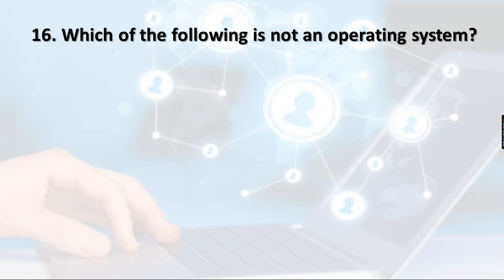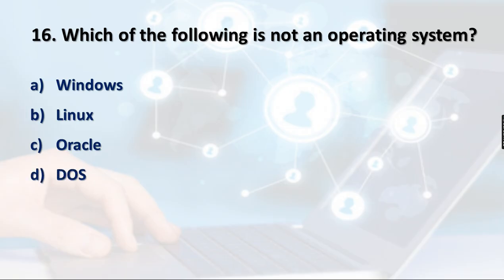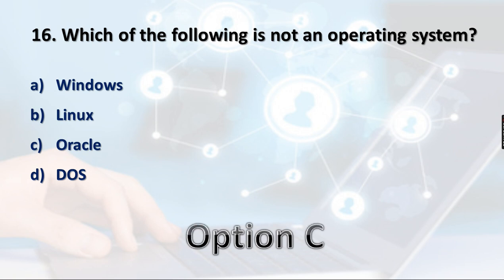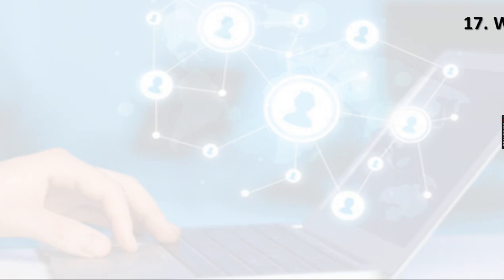Question 16: Which of the following is NOT an operating system? Options: Windows, Linux, Oracle, DOS. Windows is an operating system, Linux is also an operating system, and DOS (Disk Operating System) is also an operating system. But Oracle is a DBMS software, not an operating system. So option C, Oracle, is the right answer.